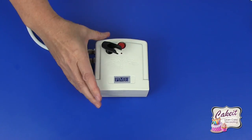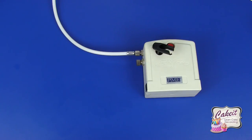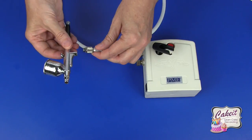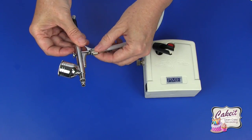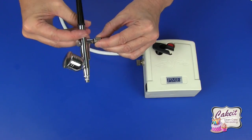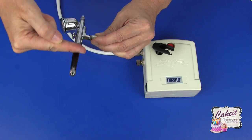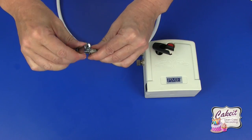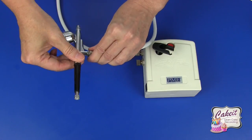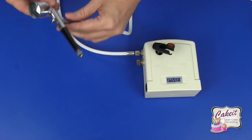And then we're able to attach the airbrush onto the other end of the hose. So just give that a little twist to begin. Once that's in position, again just twist until that's secure. Now this can go into the holder.